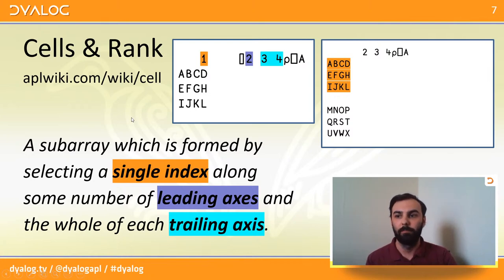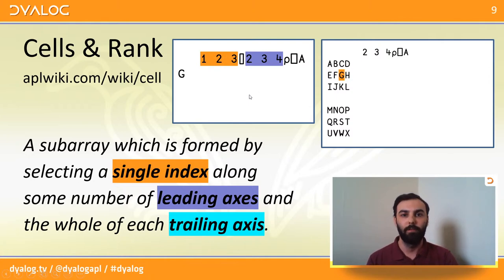And according to the APL wiki, a cell is a sub-array which is formed by selecting a single index along some number of leading axes and the whole of each trailing axis. So we can see this a bit more clearly with some examples using the index function squad here. So in this first example, I have a length one index into a rank three array and that allows me to select a rank two sub-array. If I provide a length two index, then I get back a rank one sub-array or vector. And if I give a full length three index, then I get back a zero cell or scalar.